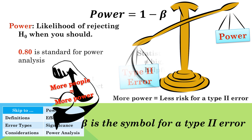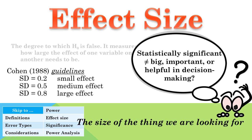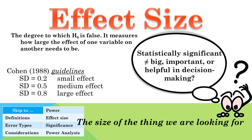A statistically significant result does not mean that there is an important or meaningful difference in the influence of one variable on another variable. It simply indicates that the researcher can be confident a difference exists. Particularly with large sample sizes, even very small differences can be statistically significant. To determine how meaningful or important the difference is, the effect size needs to be calculated.